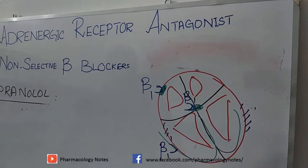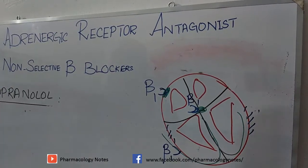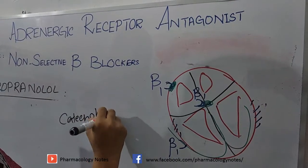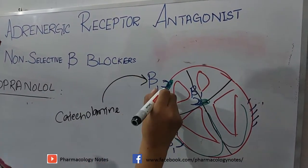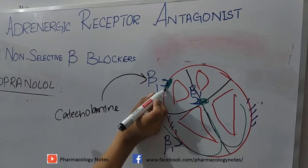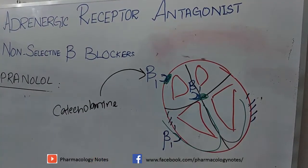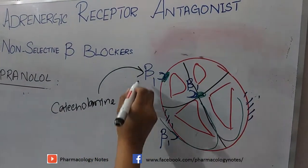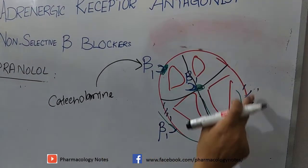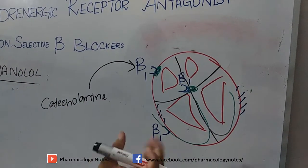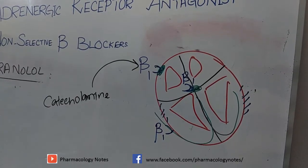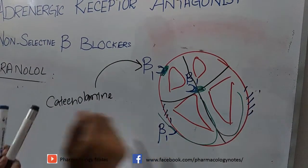Normally, when catecholamines — epinephrine and norepinephrine — are released, they act on beta receptors and increase the pacemaker activity of the sinoatrial node, thus increasing heart rate. This is termed positive chronotropic action. When acting on the AV node, it produces dromotropic action, and on the myocardium it increases contractility, termed positive inotropic action.